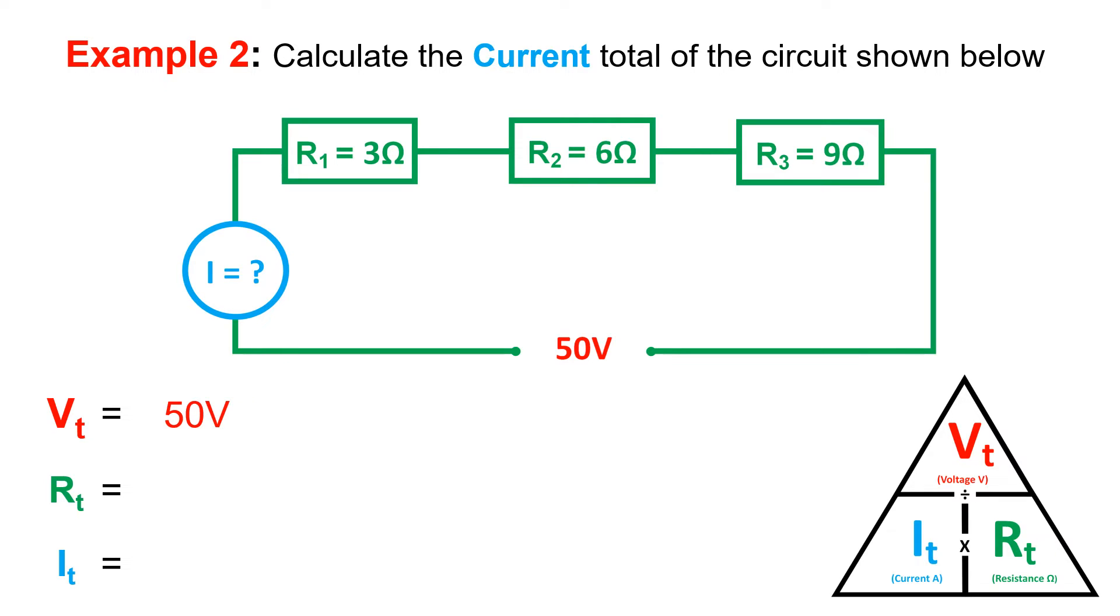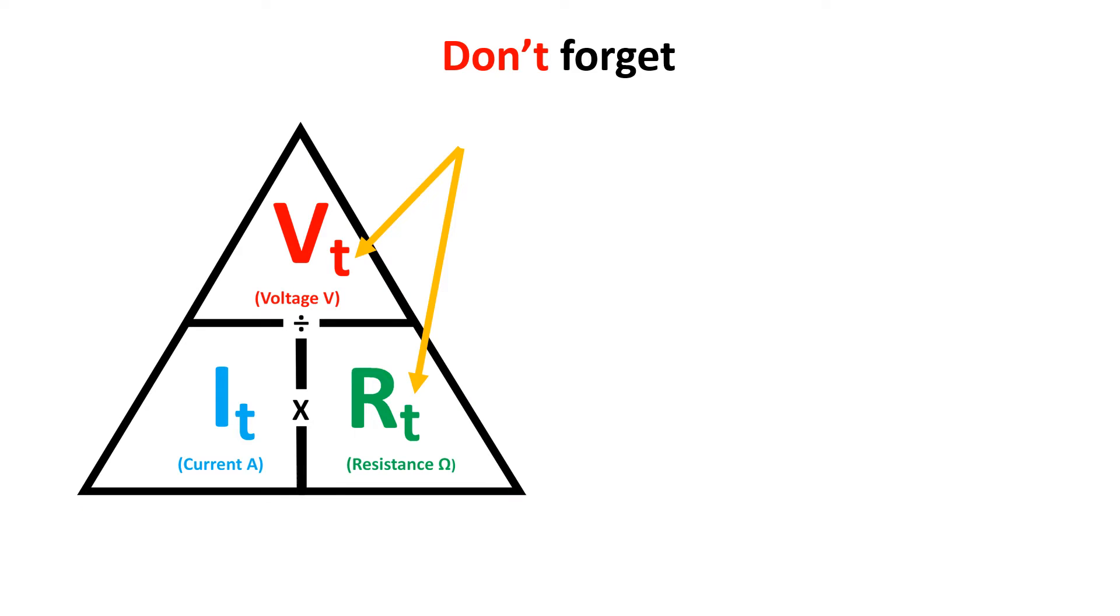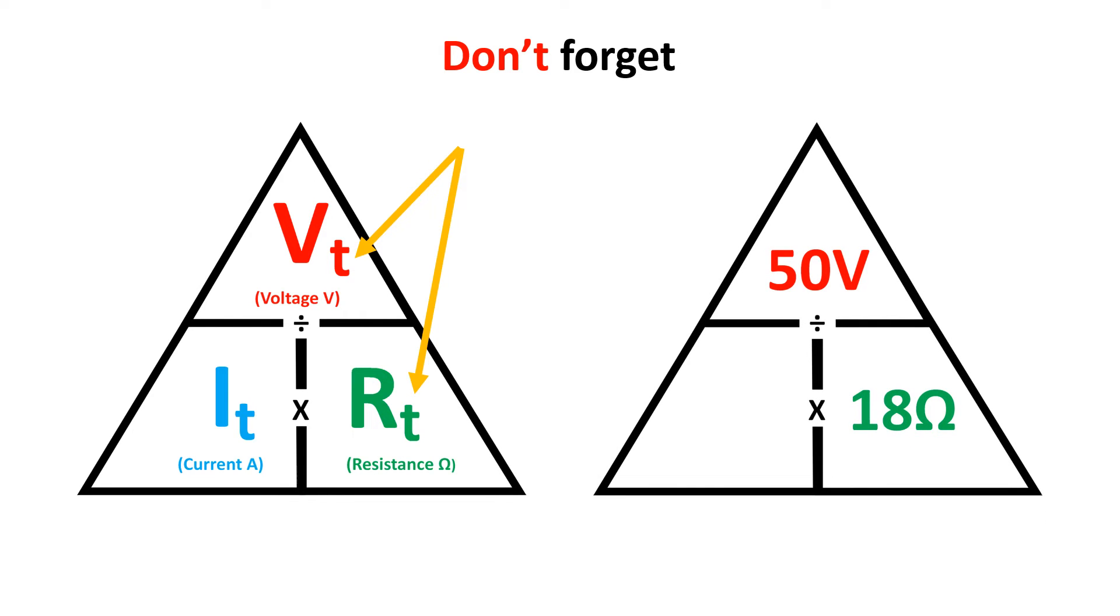If we add those resistances up, we get an RT of 18 ohms. If you look closely at the Ohm's law triangle that we are using in this example, you will notice that the subscript shows that if we are using voltage total VT with resistance total RT, this means we are calculating current total, which is IT. 50 volts divided by 18 ohms gives us a current total of 2.78 amps.